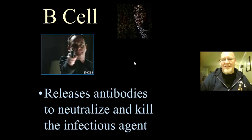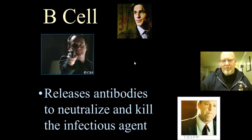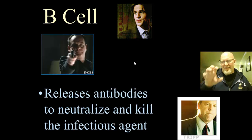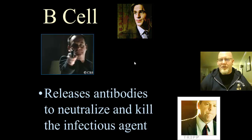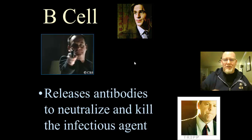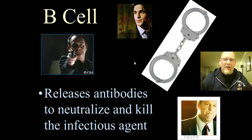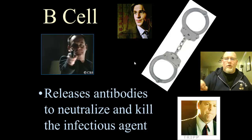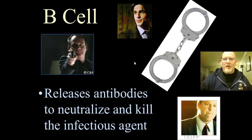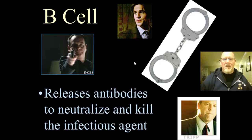Then we have another white blood cell called the B cell. The B cell acts like a police officer — it releases antibodies that attach to the virus and neutralize it, preventing the virus from spreading. You can't really kill a virus, but you can neutralize it so it doesn't spread. Think of antibodies like handcuffs: they immobilize the germ so it can't spread or hurt anything else. That's what the B cell does.